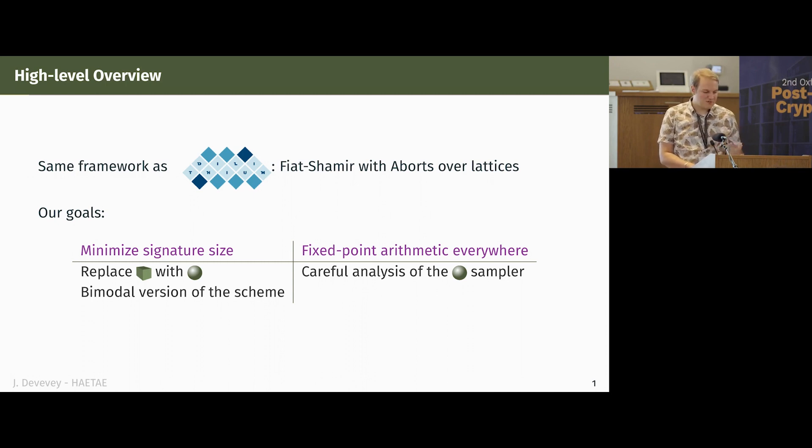This is achieved by two main changes to the scheme. You replace the hypercubes that were used in Dilithium with hyperballs, and you go for a bimodal version of the scheme. The drawback of the hyperballs is that they are continuous, so you need to use either floating points or fixed points. We tried to make fixed-point arithmetic available at every step, which allows us to get a constant-time implementation.